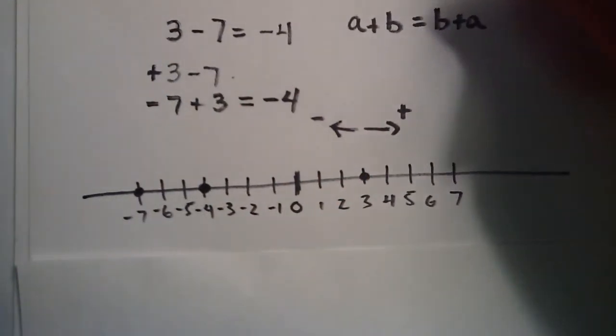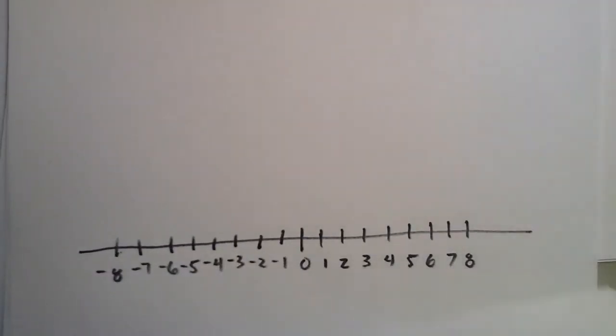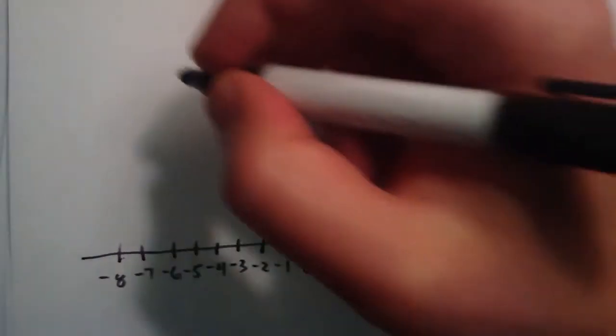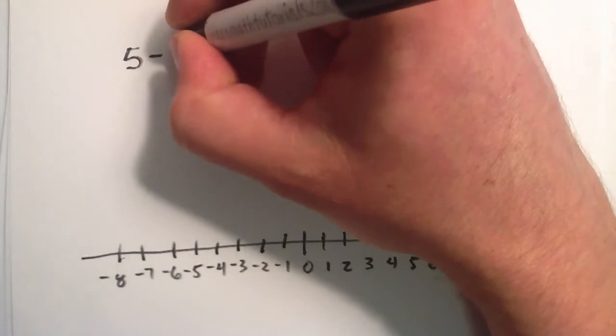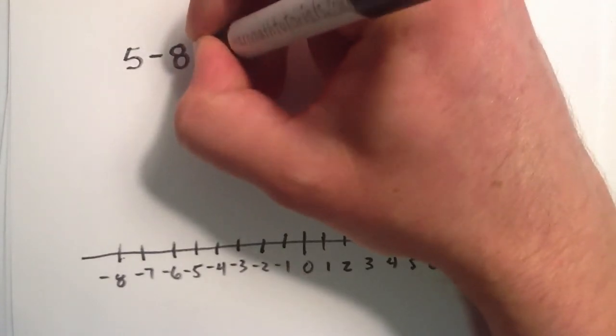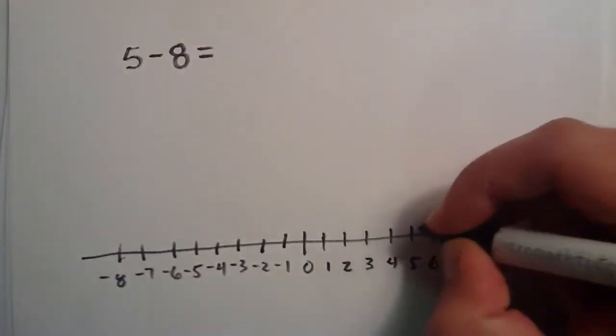So let's go ahead and do one more example. This time, let's say that we start with $5 and take away 8.